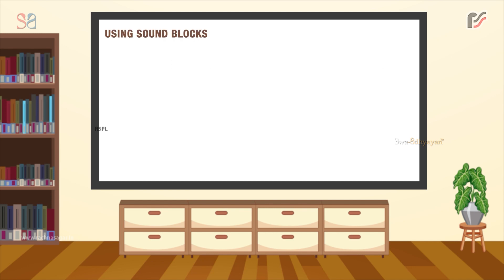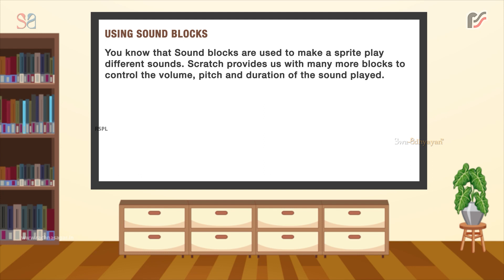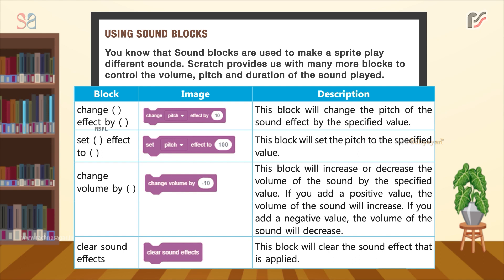Next, using Sound blocks. Sound blocks are used to make a sprite play different sounds. Scratch provides many more blocks to control the volume, pitch and duration of the sound. The 'change effect by' block will change the pitch of the sound effect by the specified value. The 'set effect to' block will set the pitch to the specified value. The 'change volume by' block will increase or decrease the volume of the sound by the specified value. If you add a positive value, the volume increases; if you add a negative value, the volume decreases. The 'clear sound effects' block will clear the sound effects applied.